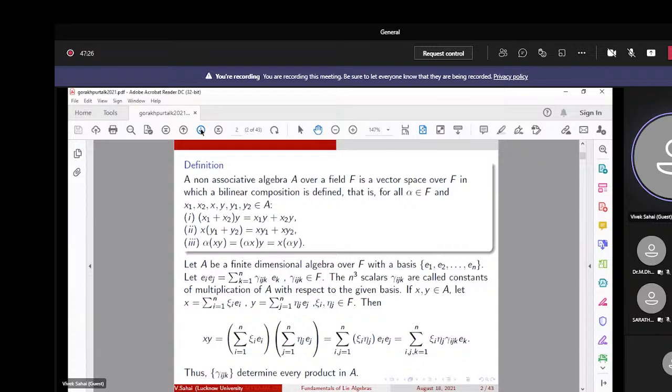A non-associative algebra is said to be associative if the product also satisfies the associative property. So if (xy)z = x(yz) for every x, y, z in A, then the algebra A is called associative.